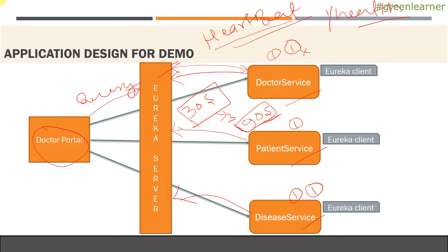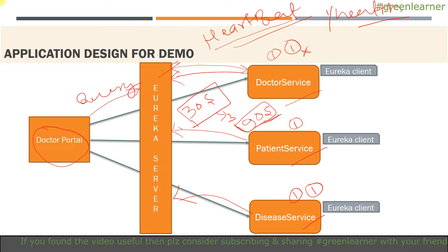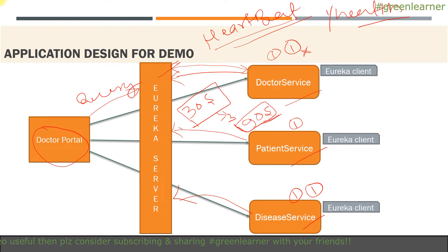This default behavior has to be taken care of when you are designing your system. When your service is down it should properly communicate to the Eureka server, but in many cases you may have shut down your microservice and it has not properly shut down and was not able to communicate to the Eureka server. So it will show in the Eureka server that it is up, but actually it is down. This is a compromise with distributed systems — you have to handle this situation properly.